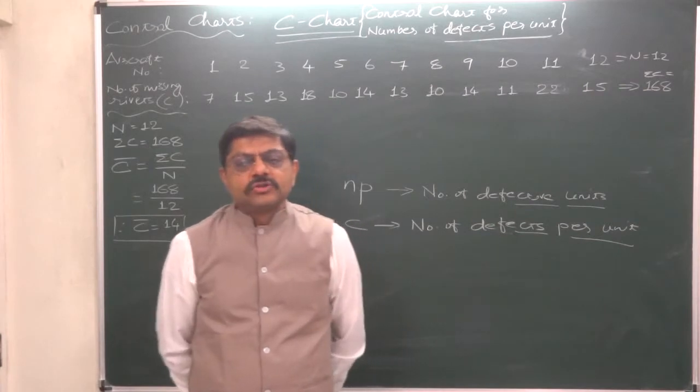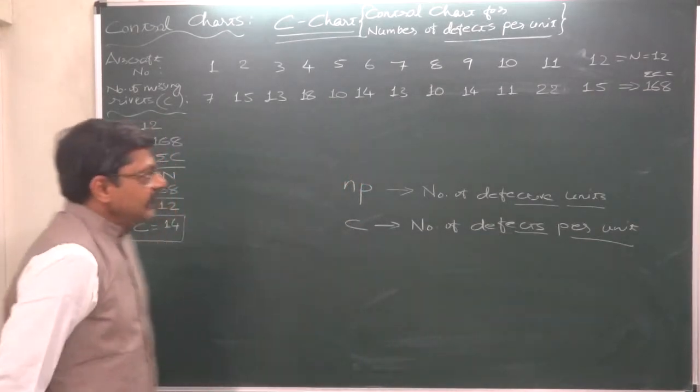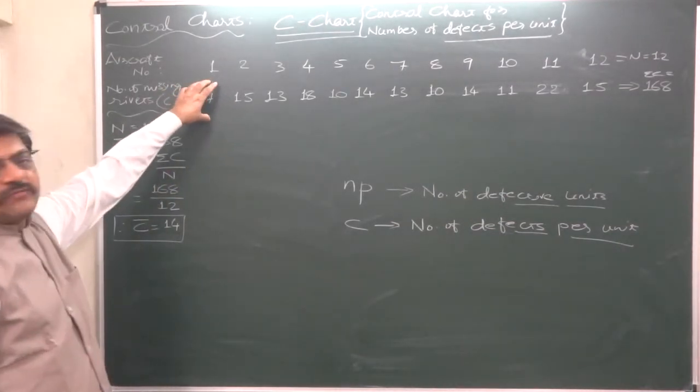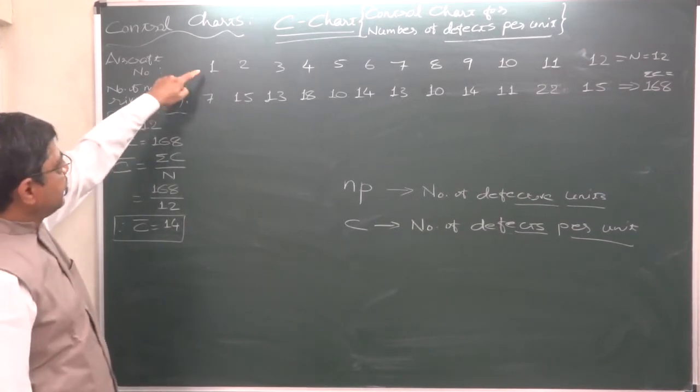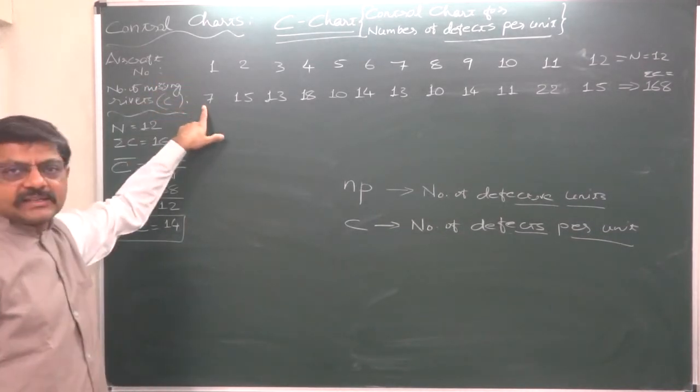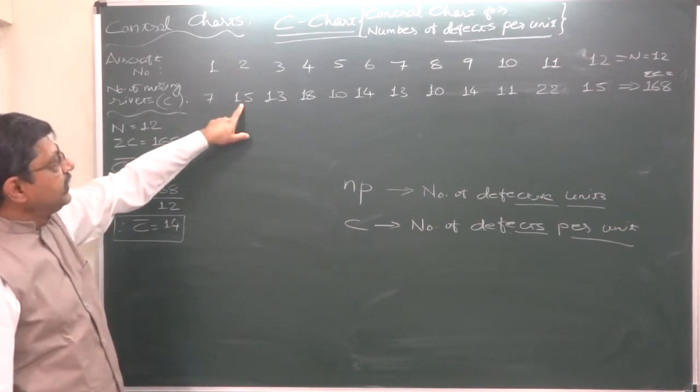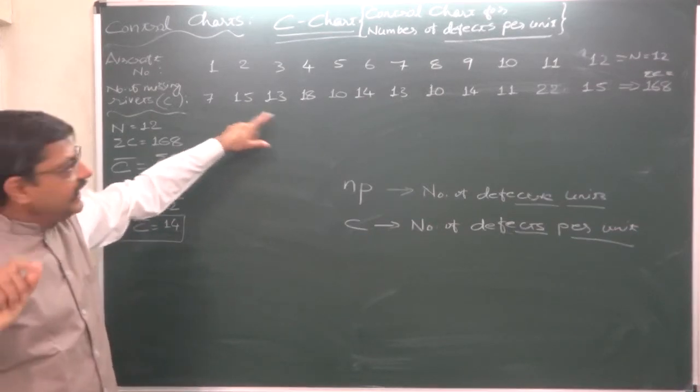Not a single rivet should be missing before taking off. So these are the aircrafts having this number of missing rivets found while inspection. In aircraft number 1 there were 7 defects—7 rivets were missing. In aircraft number 2, 15 rivets were missing, that means there were 15 defects, and so on.